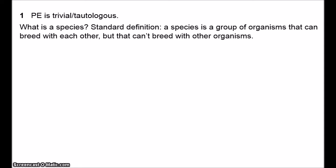There are a whole bunch of problems with this definition, but it is a very nice, straightforward account and it's pretty widely accepted. However, there's an obvious problem applying it in paleontology, because all we have is the fossil record. How are we supposed to know whether two similar fossils were reproductively isolated from one another?